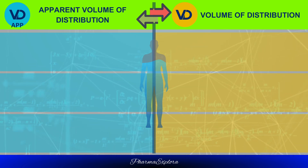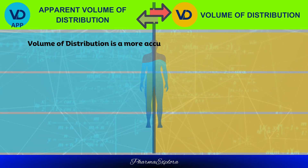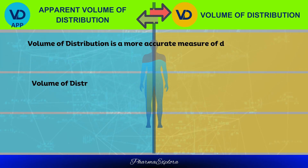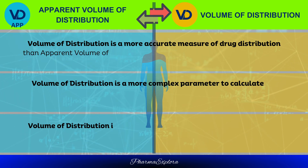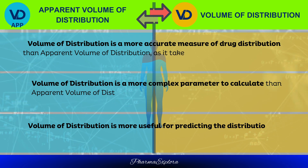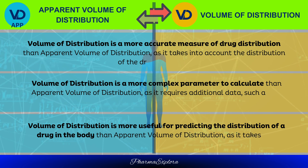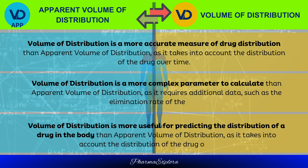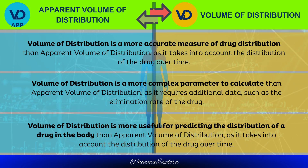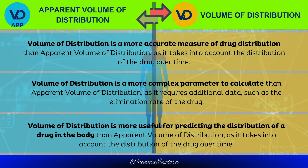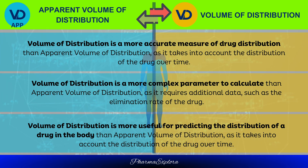Volume of distribution is a more complex parameter to calculate than apparent volume of distribution, as it requires additional data such as the elimination rate of the drug over time. However, it is more useful for predicting the distribution of a drug in the body, as it takes into account the distribution of the drug over time.